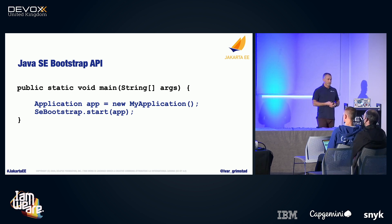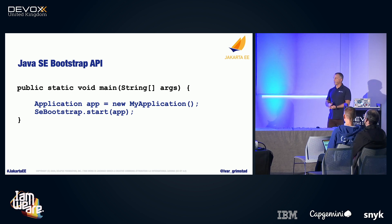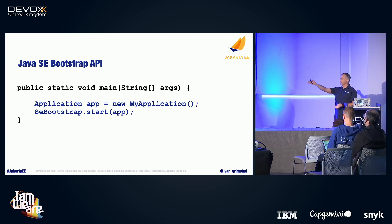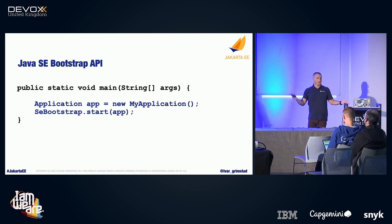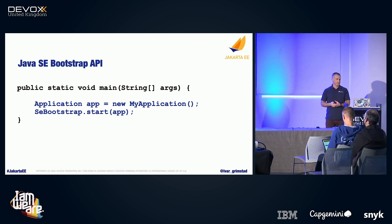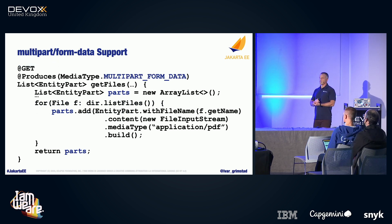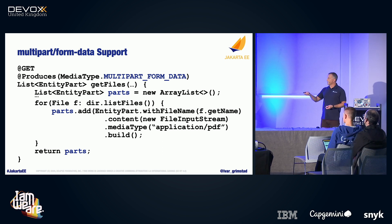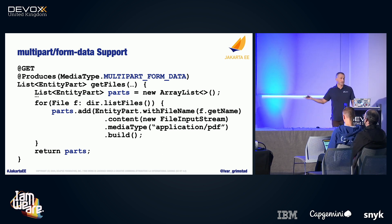The REST project will create a Java SE bootstrap API, which means you can bootstrap a RESTful application from Java SE without running it in a container. Your application class stays the same, so you can use the same code for deploying to Jersey or running directly in Java SE. They're also adding multi-part form data support — you can define the media type you're producing and return parts with different media types. This is already supported in most implementations but now becomes portable and standardized.